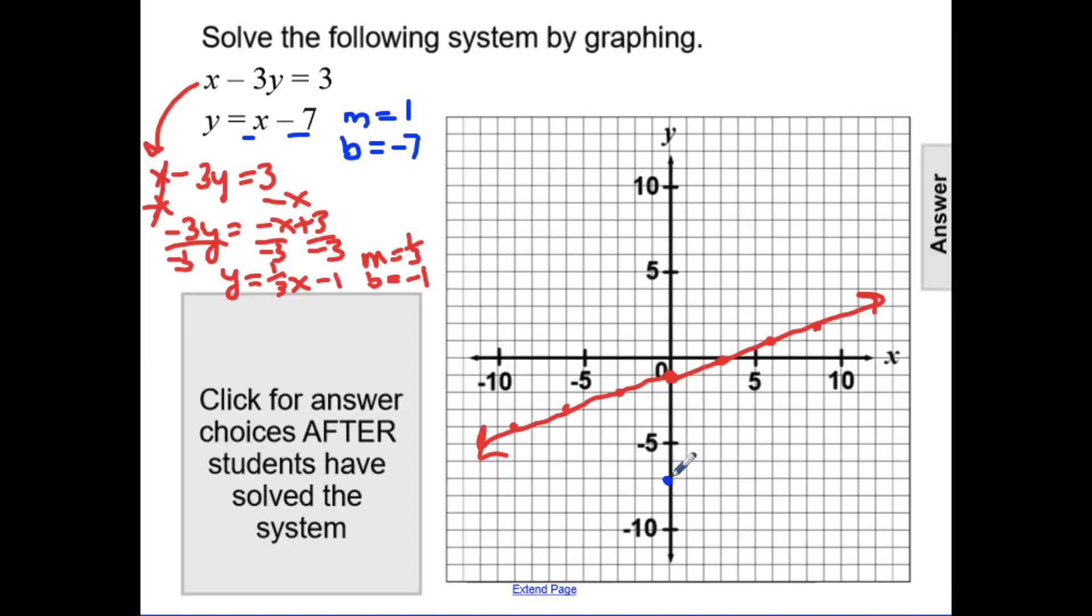We'll begin at 0, negative 7, and go up 1, right 1, up 1, right 1, up 1, right 1. Or down 1, left 1. And we'll connect these points to draw that line.